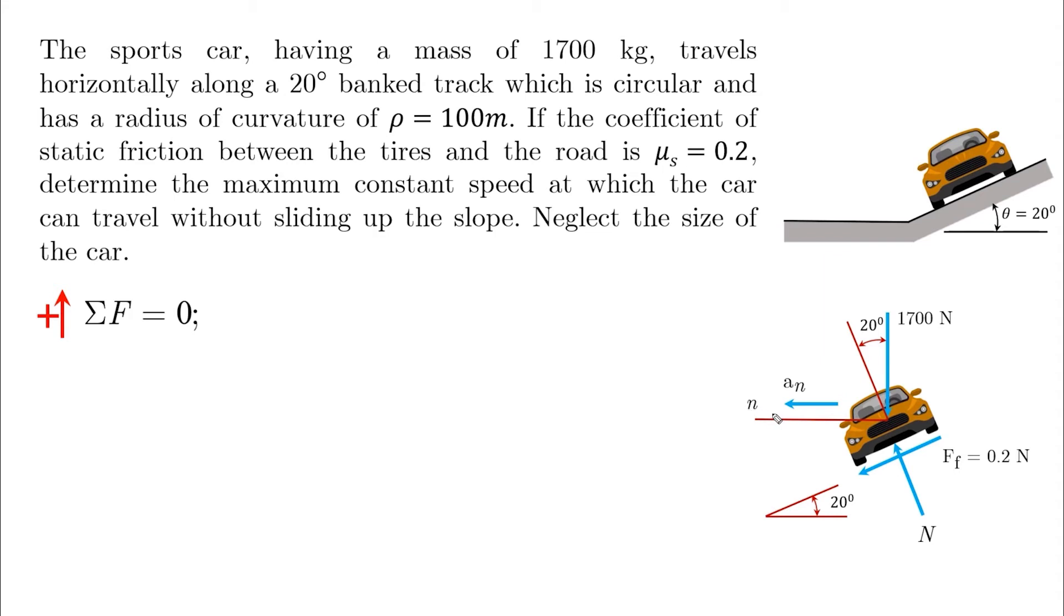By taking the summation of forces in the vertical direction equal to zero, we have N cosine 20. This is 20 also. And we have minus 0.2 sine 20. This theta is 20. And this is the friction force component in the vertical direction down, minus mg which is 1700 multiplied by 9.81, and this is equal to zero. And from here we can find the normal directly which is going to be 19,140 Newtons.